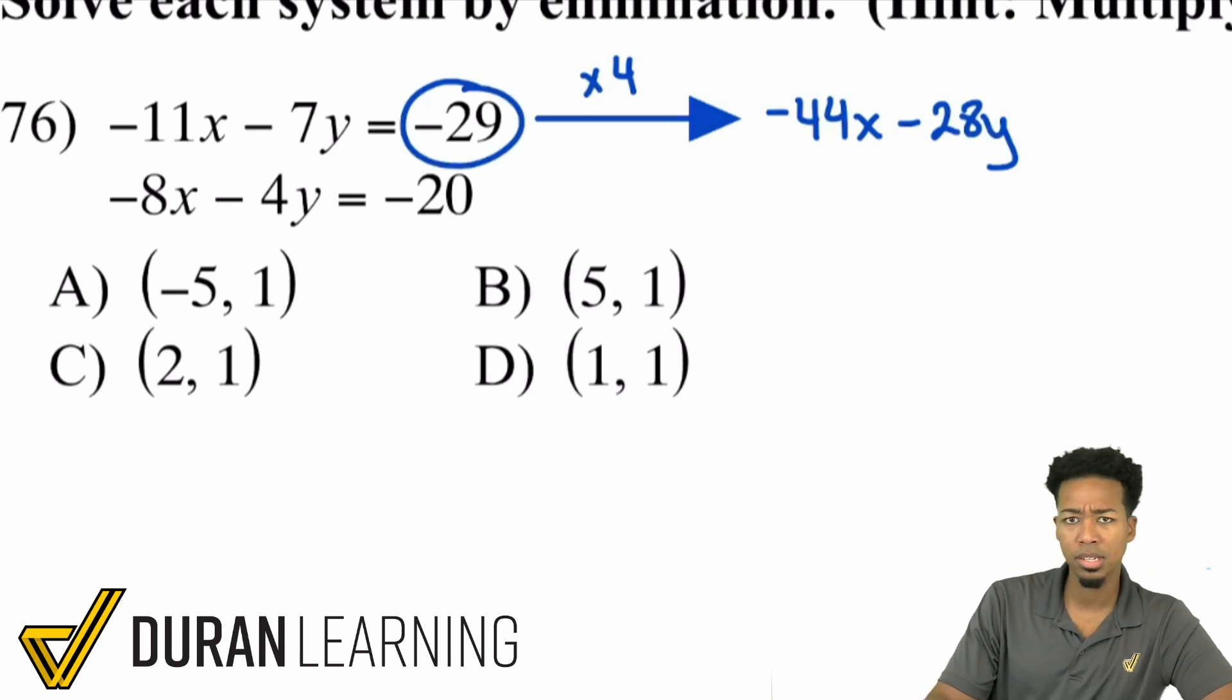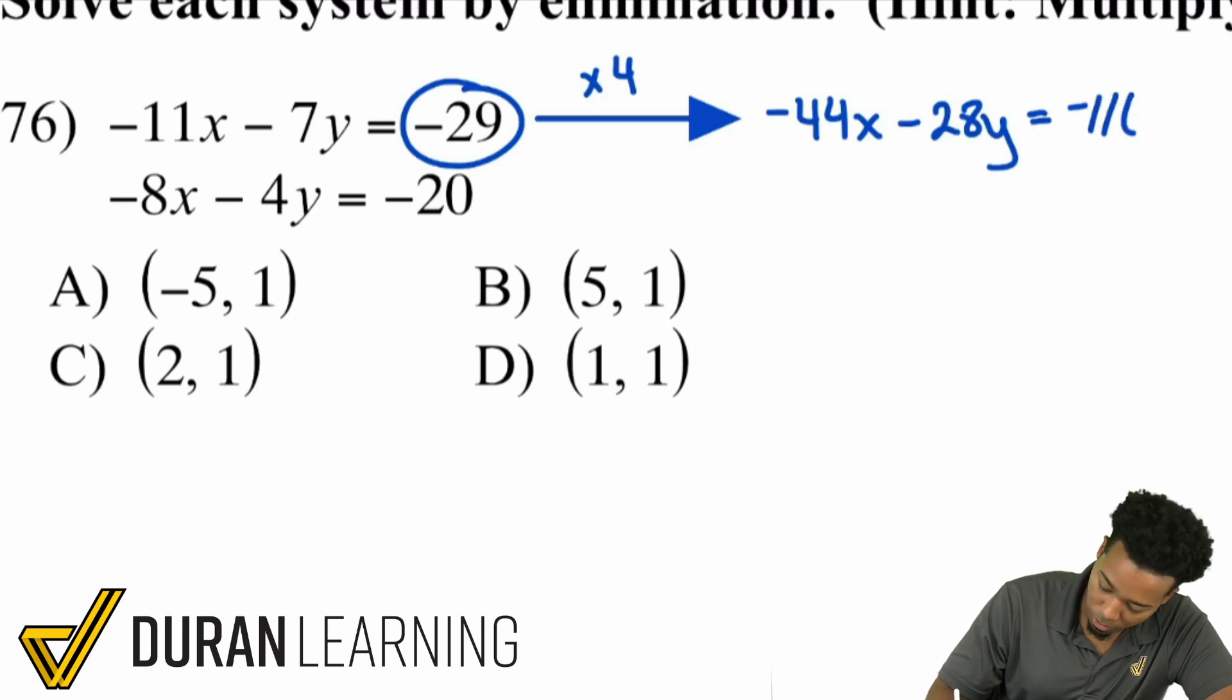Negative 7y times 4 is negative 28y. And then on the right side over here, we have negative 29 times 4. A little bit of mental math needed. 20 times 4 is 80, 9 times 4 is going to be 36. 80 plus 36 is going to be 116, negative 116 there.